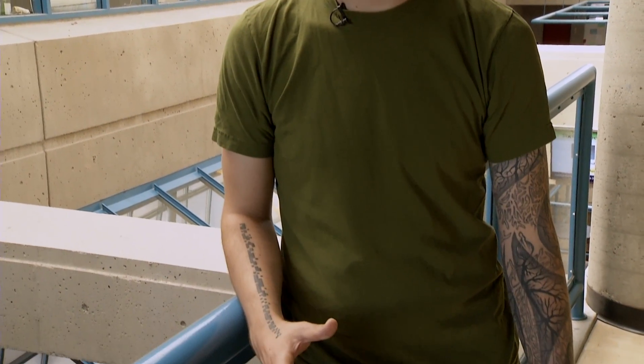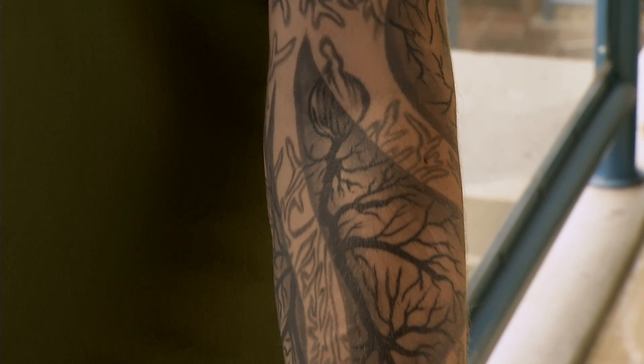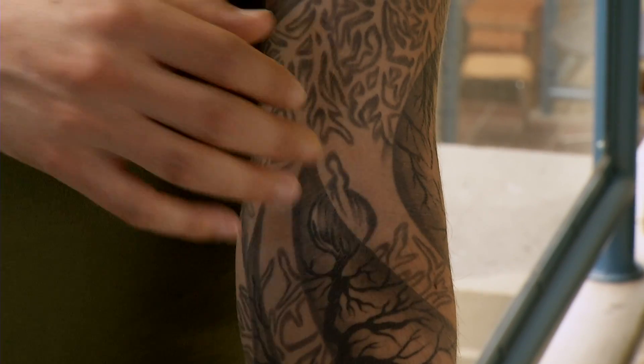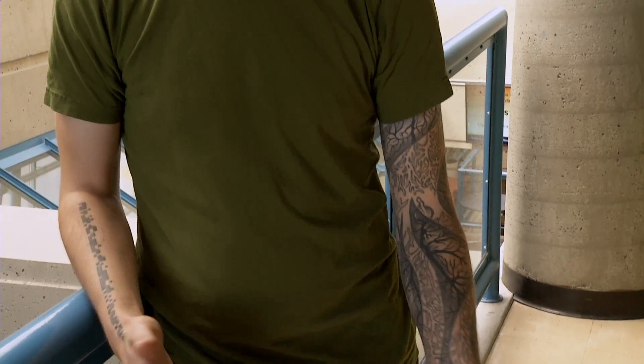The tattoos I have reflect a lot of my interests, sort of past and current. The sleeve on this arm is neuron-themed, so you have little neuron cell bodies and then the dendrites going down. And this is obviously associated with what I study now.